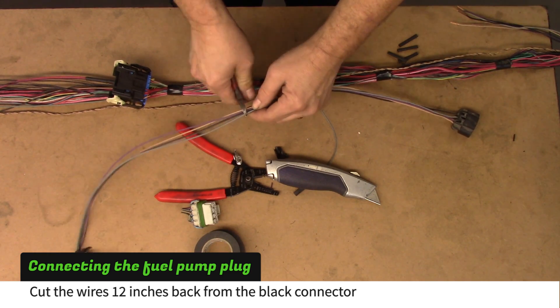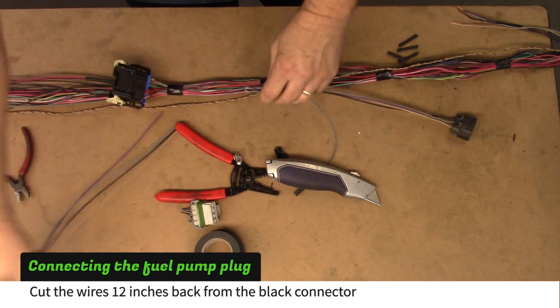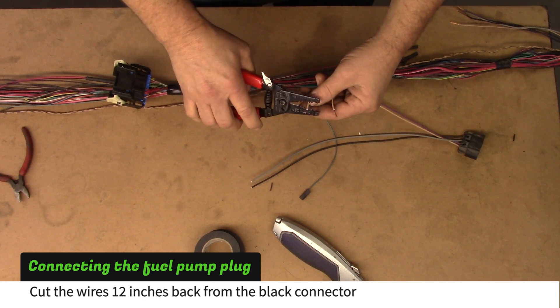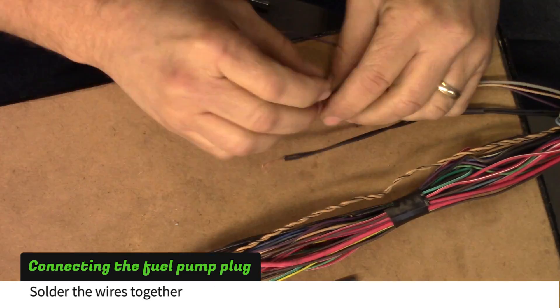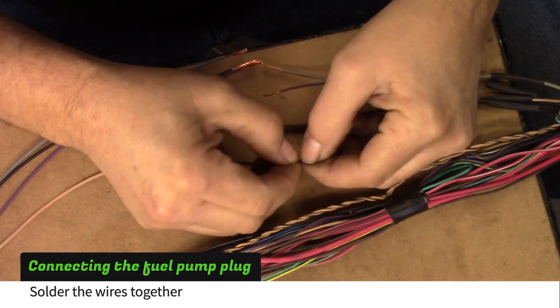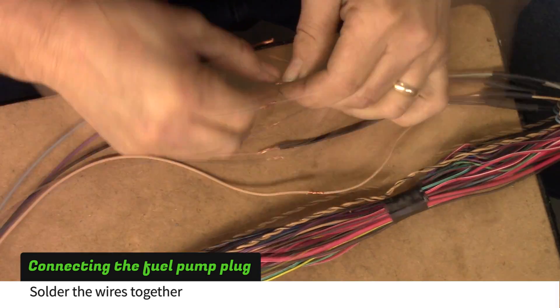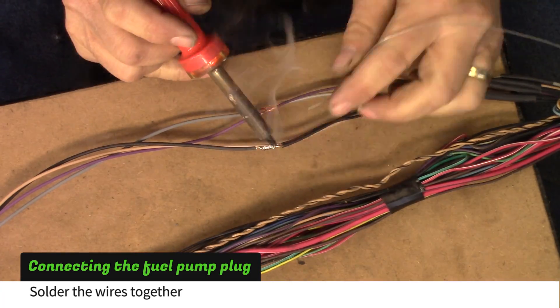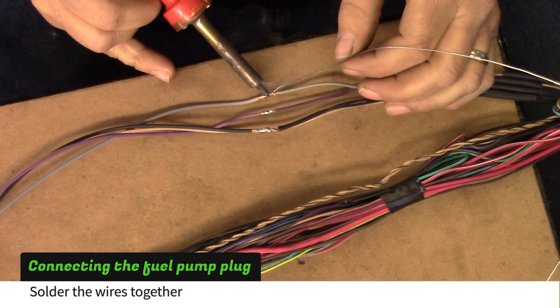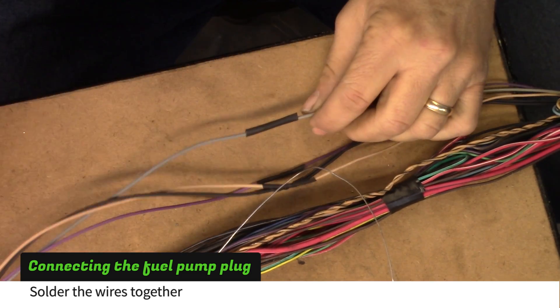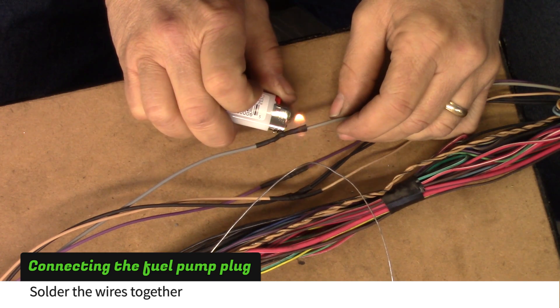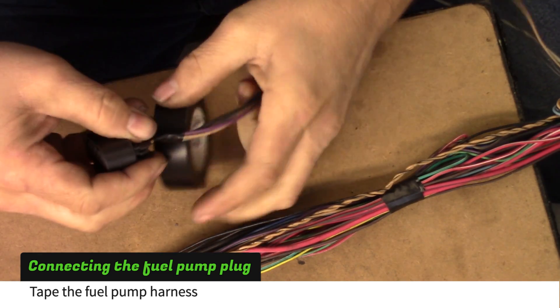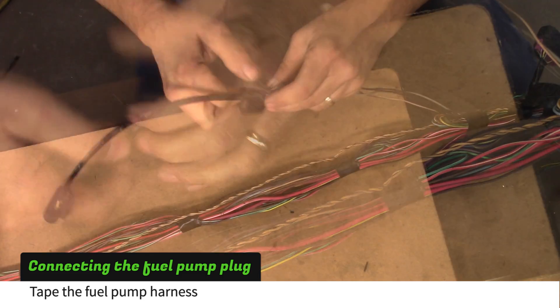Cut about 12 inches from the black plug. Solder the wires together making sure to match the colors. Tape the fuel pump harness back to where it meets the main harness.